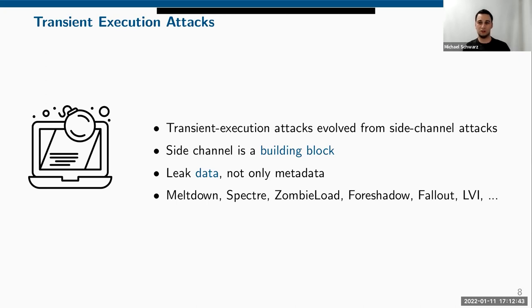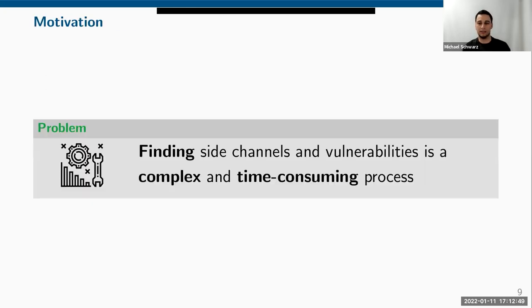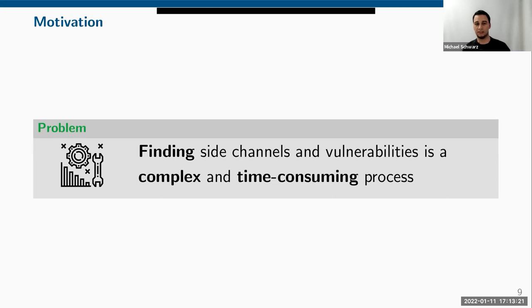But finding these side channels and vulnerabilities is a huge problem. It's a really complex and time-consuming process requiring a lot of manpower, trying a lot of things, investing a lot of time, and also being lucky. This doesn't scale. The idea is to automate it — but how do we automate such a complex vulnerability-finding process?